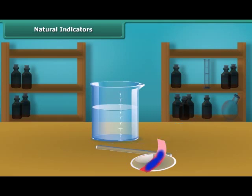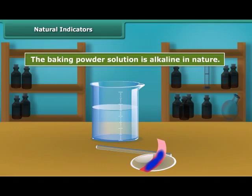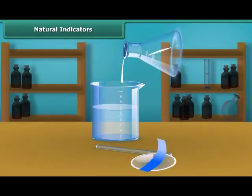Dip a clean stirring rod into the baking powder solution and then touch the wet stirring rod to the red litmus paper. Red litmus paper turns blue, indicating that the baking powder solution is alkaline in nature.